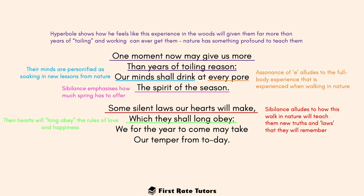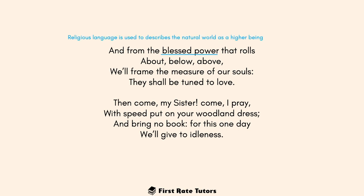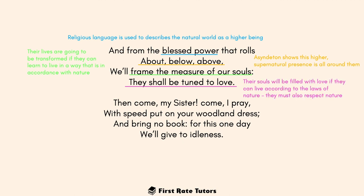The speaker states their hearts 'shall long obey' the rules of love and happiness that nature teaches, and 'we for the year to come may take our temper from today' — meaning the walk will fortify and strengthen them for the coming year. Religious language is used to describe the natural world as a higher being — 'the blessed power' — very typical of Romantic poetry where nature is seen as close to God and sublime. The phrase 'about, below, above' is a syndeton showing the supernatural presence all around them. The speaker states this will 'frame the measure of our souls,' transforming their lives, and 'they shall be turned to love' — their souls will be filled with love by following the laws of nature.